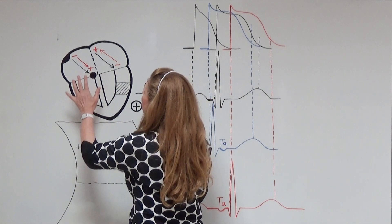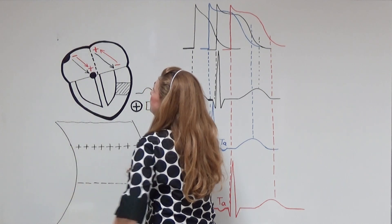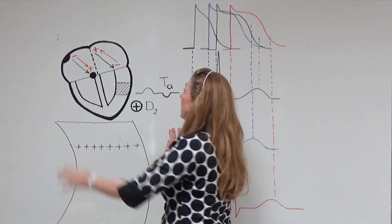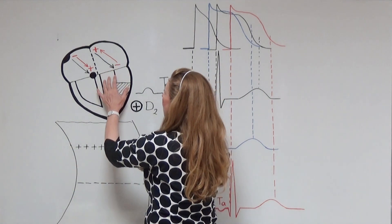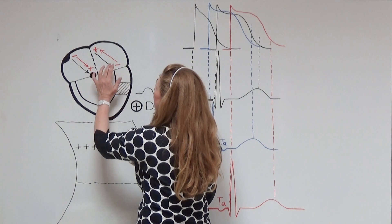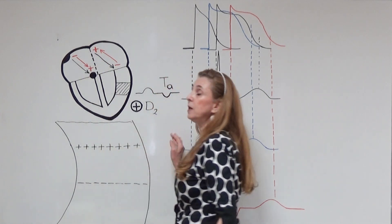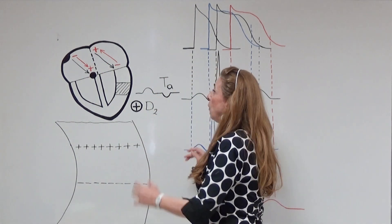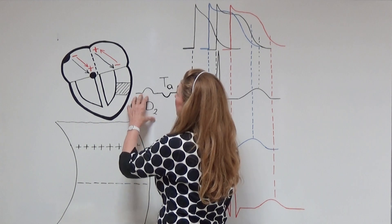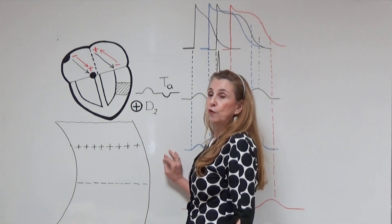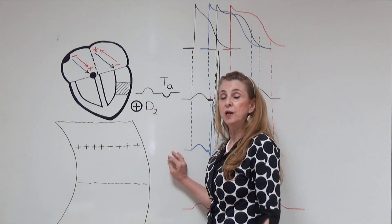The first cells to repolarize are close to the SA node, and when they repolarize their outer surfaces become positively charged. The cells on the further end are still negatively charged, so we have a dipole. The red arrow represents this vector, with its tip showing the positive end of the dipole. The D2 electrode is now close to the negative side of the dipole, which means it is going to record a negative wave — this is our TA wave.